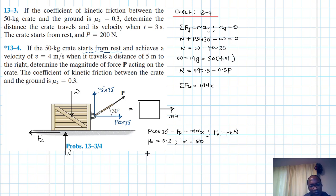What else? And we know that our M is just 50. So if we wrote this, it just becomes P cos 30 minus 0.3 times N and we found N as 490.5 minus 0.5P, right? Remember this? Times A_X.